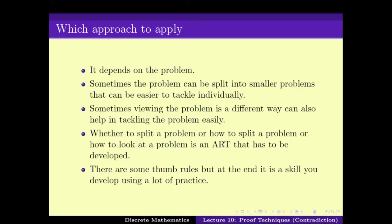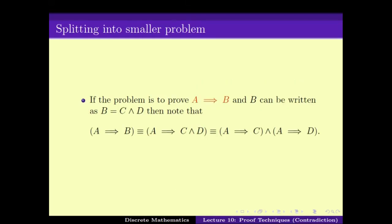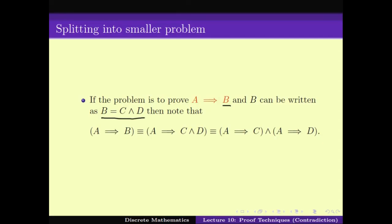Now, till now we have seen some of the tricks. The first thing that we saw was how to split a problem into smaller problems when B, the deduction, is of the form C and D. In other words, if B is of the form C and D, then proving A implies B is the same as proving A implies C and A implies D. We saw an example of how this way of splitting the problem can help you divide it into two parts.